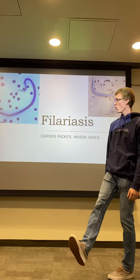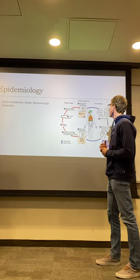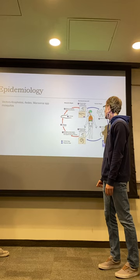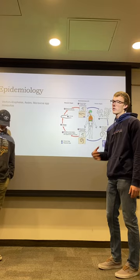First, the epidemiology. We have a diagram that tells us how we can contract it and all the different stages. The mosquito takes in a blood meal, takes in a larvae stage, and then as it grows into an adult, it moves through our bloodstream and can start infecting us.